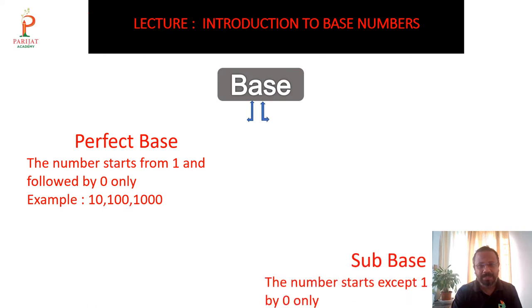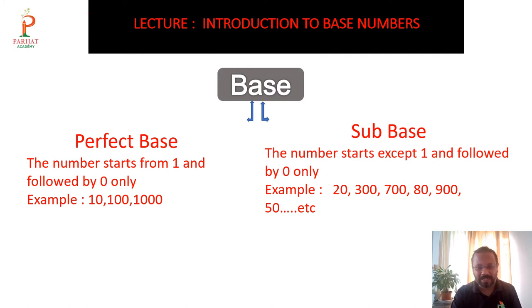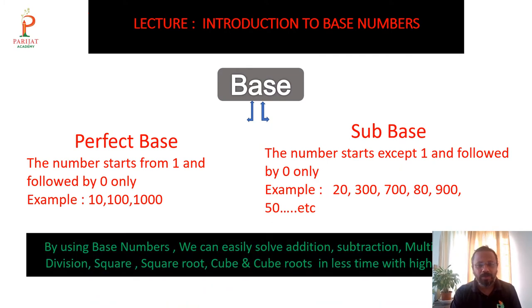The second type of base is the sub base. A sub base is a number that starts with a digit other than 1 but is followed by zeros only — for example, 20, 300, 700, 80, 90, 50, etc. Such numbers are called sub base numbers.